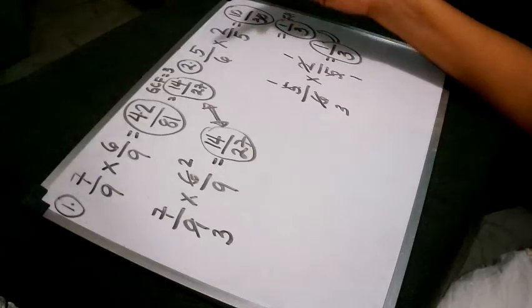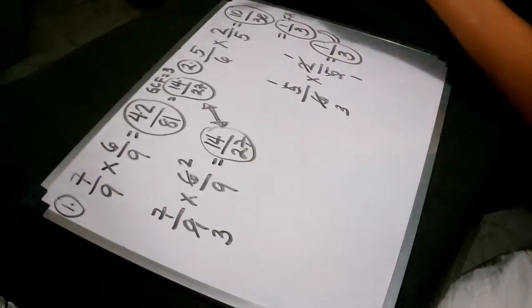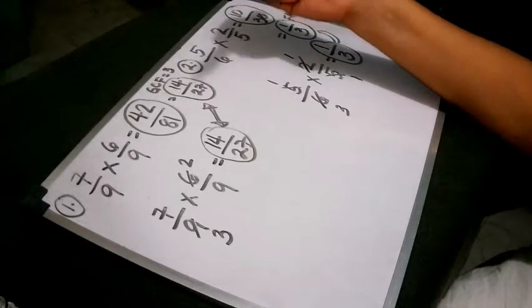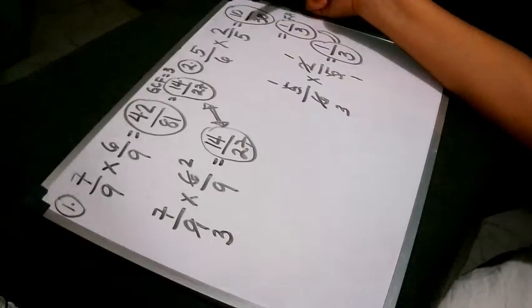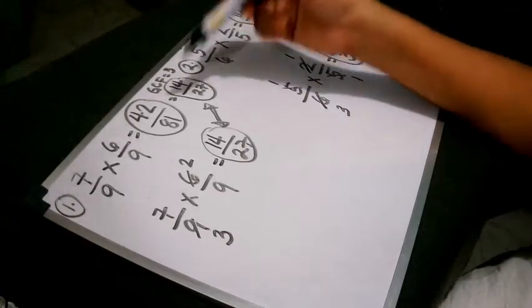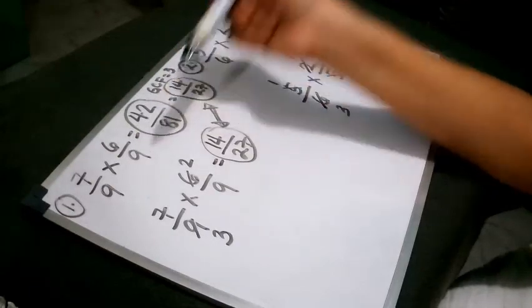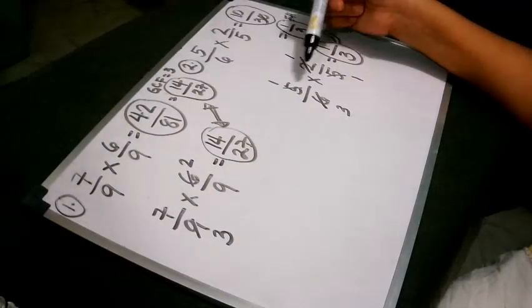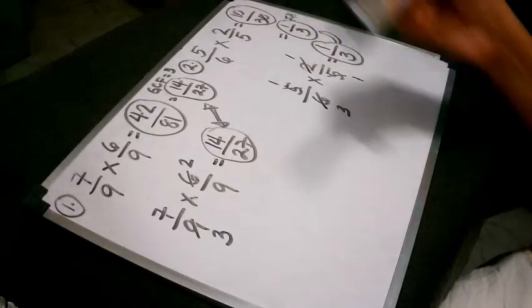That's how we multiply fractions, regardless of their kind. Whether they are similar fractions or dissimilar fractions, simply multiply the numerators and the denominators, or you can use the cross-cancellation method. That's it!